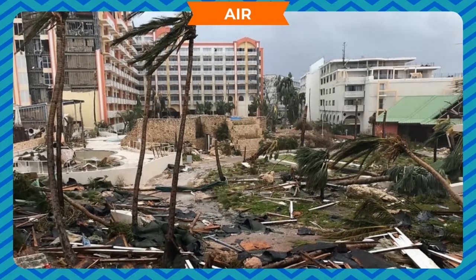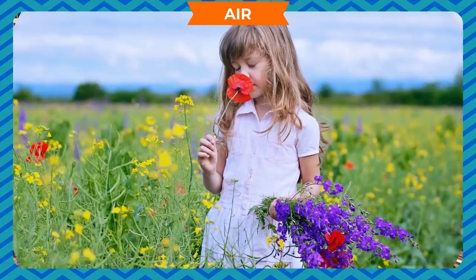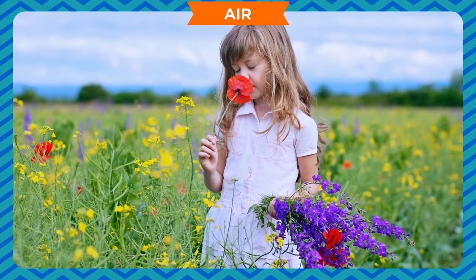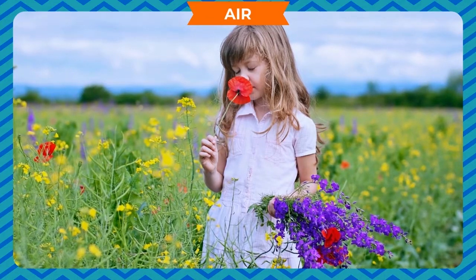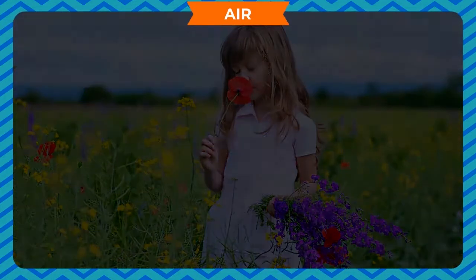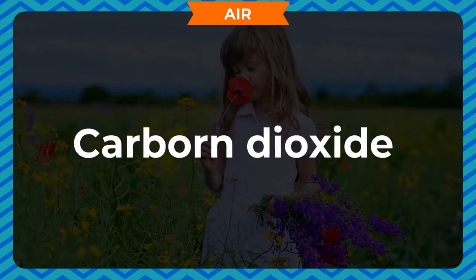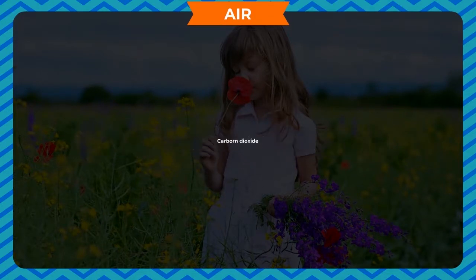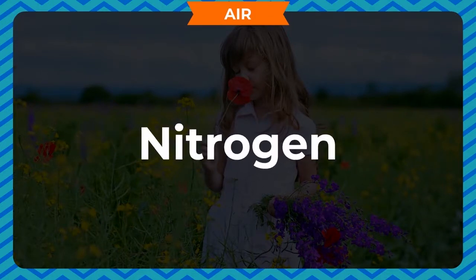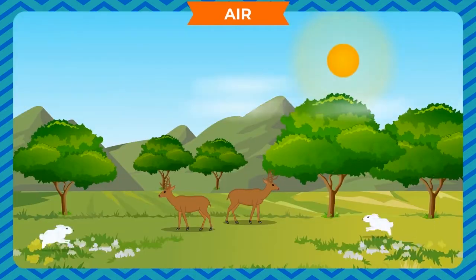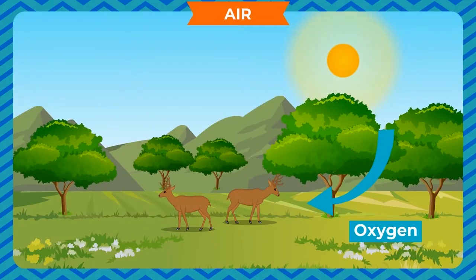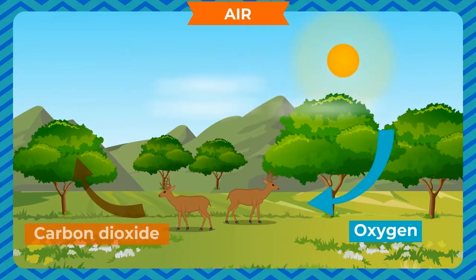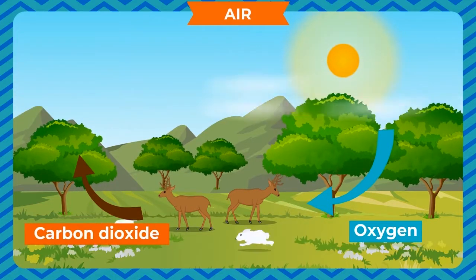All living things need air for breathing. Air contains gases such as oxygen, carbon dioxide, nitrogen, etc. All living things use oxygen to breathe. Plants also take carbon dioxide from air to make their food.